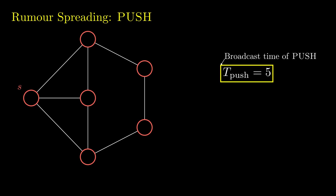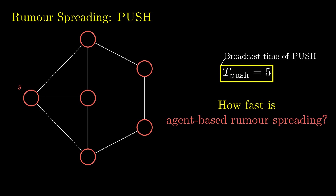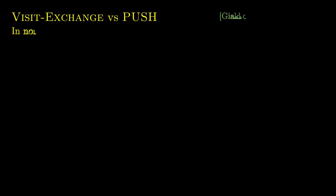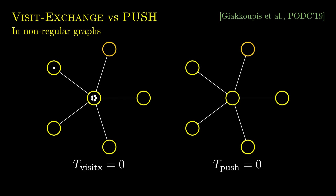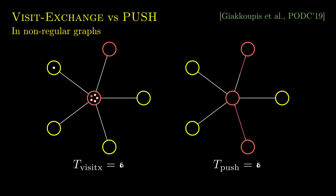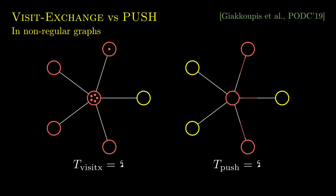In our previous result, we showed that in non-regular graphs, push and visit exchange protocols are not equivalent in terms of their broadcast time. Consider the most extreme non-regular case, the star graph. By the coupon collector problem, push takes n log n rounds to complete in this graph, while visit exchange takes logarithmically many rounds.